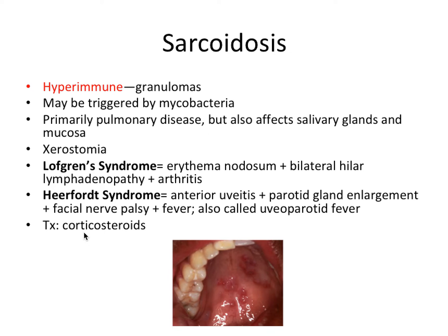We have two syndromes linked to sarcoidosis. Lofgren's syndrome involves erythema nodosum, bilateral hilar lymphadenopathy — the hilar lymph nodes being those associated with the lungs — and arthritis. Heerfordt syndrome involves anterior uveitis, parotid gland enlargement, facial nerve palsy, and fever. It's also called uveoparotid fever, which is probably the best way to remember it because it merges together the uveitis, the parotid gland involvement, and the fever — you just have to remember the facial nerve palsy on top of that. Heerfordt equals uveoparotid fever; Lofgren involves lymph nodes, redness, and arthritis.